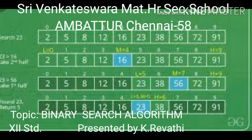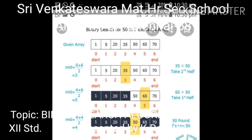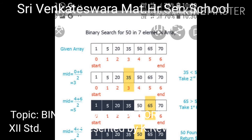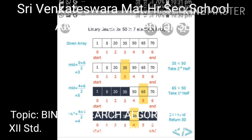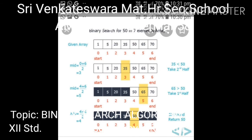Let me give you a simple example with seven elements in a given array. Now look at this picture. The picture contains 1, 5, 20, 35, 50, 65, 70 — which is used for binary search. After sorting all these elements in an array, you will find out the search element in the given array.